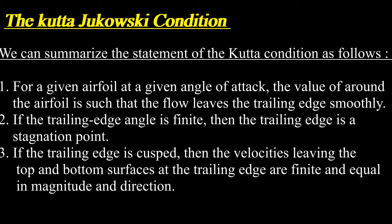We can summarize the statement of the Kutta condition as follows. 1. For a given airfoil at a given angle of attack, the value of circulation around the airfoil is such that the flow leaves the trailing edge smoothly. 2. If the trailing edge angle is finite, then the trailing edge is a stagnation point. 3. If the trailing edge is cusped, then the velocities leaving the top and bottom surfaces at the trailing edge are finite and equal in magnitude and direction.